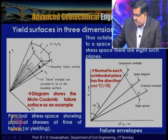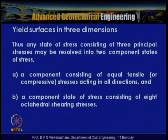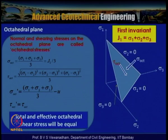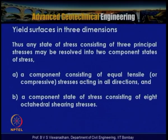Any state of stress with principal stresses σ₁, σ₂, σ₃ may be resolved into two component states of stress: one component consisting of equal tensile or compressive stresses acting in all directions, and another component consisting of eight octahedral shearing stresses. These are called octahedral stresses — the octahedral normal stress σ_oct and the octahedral shear stress τ_oct.